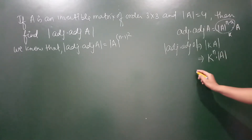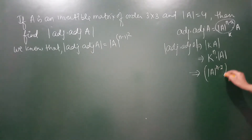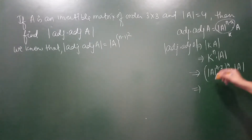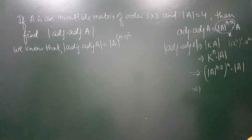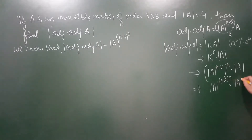क्यों न हम k की value यहाँ put करें। k की value होगी determinant of A की power (n−2), और whole power n है — multiply हो रहा है determinant of A से। Laws of exponents से, अगर A की power B हो और उसमें power C हो, तो A की power BC बन जाता है। So यह हो जाएगा determinant of A की power n(n−2) and determinant of A as it is.